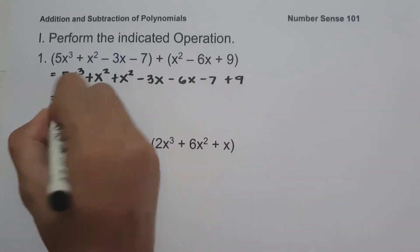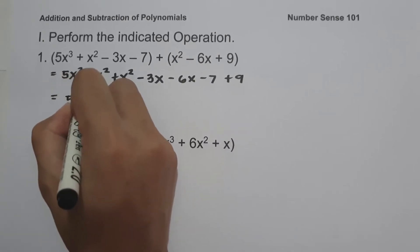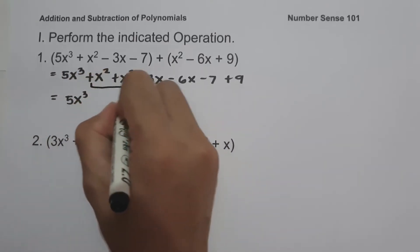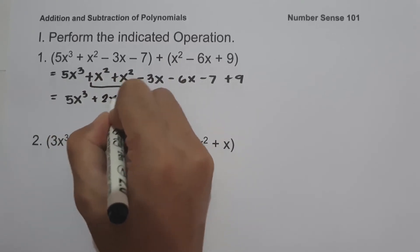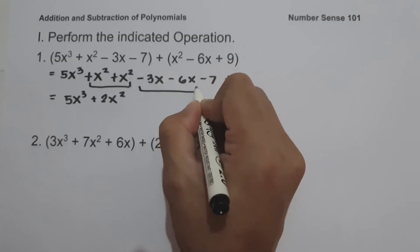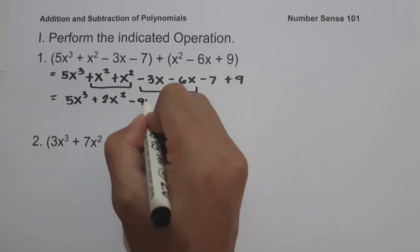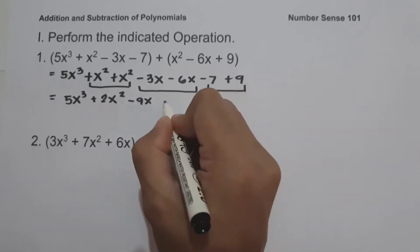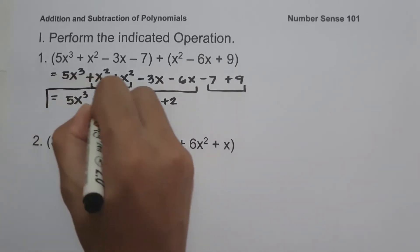So let us simplify. We have 5x cubed, then x squared plus x squared is 2x squared, negative 3x minus 6x is negative 9x, and negative 7 plus 9 is positive 2. And this will be our answer.